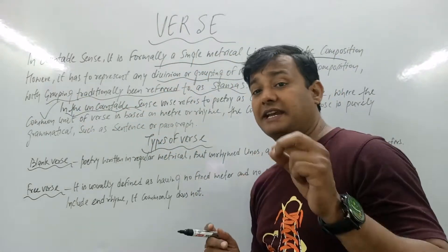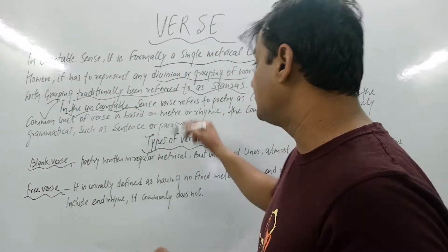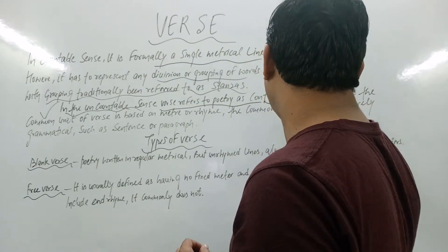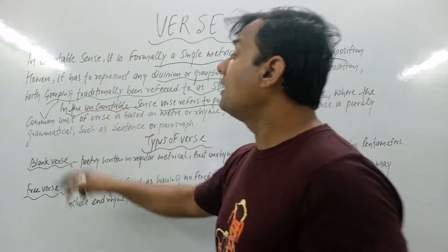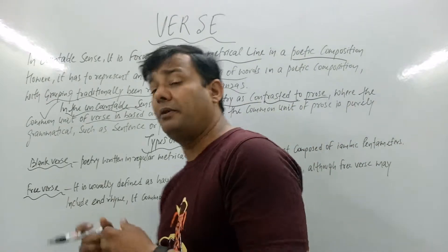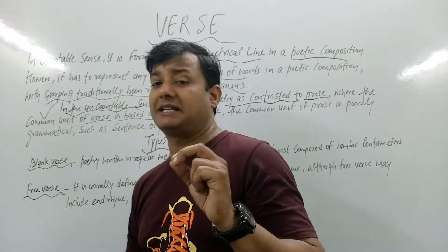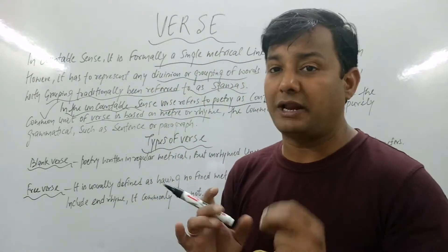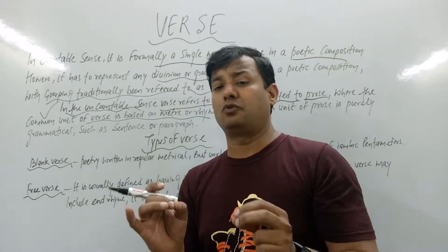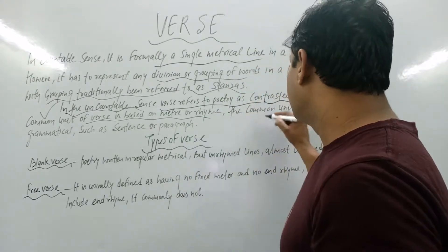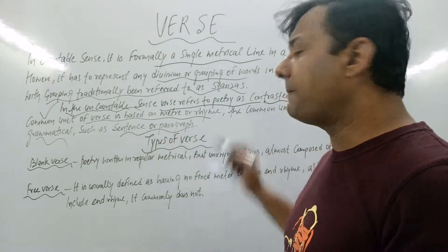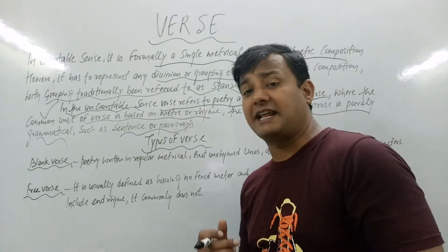In the uncountable sense, verse refers to poetry as contrasted to prose, where the common unit of verse is based on meter or rhyme. The common unit of prose, on the other hand, is purely grammatical, such as a sentence or paragraph.